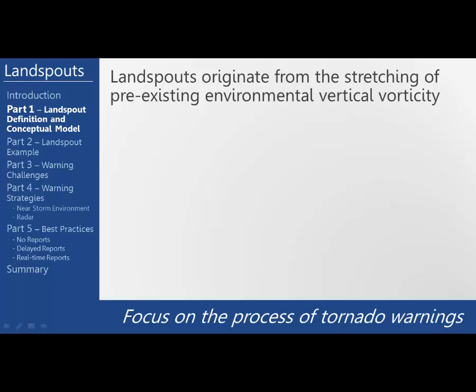So with that, let's get started. Landspouts originate from the stretching of pre-existing environmental vertical vorticity. There is no mesocyclone and these are not supercell tornadoes, although they can occur in association with supercell flanking lines.